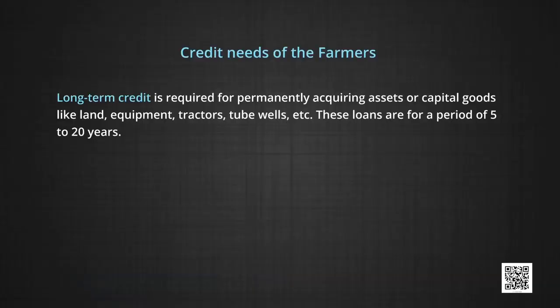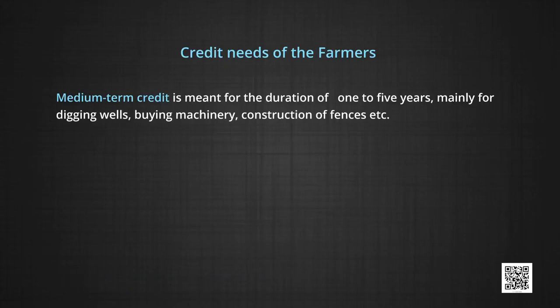Most farming families in India are small and marginal landholders, producing just enough for subsistence, and they do not have any savings which they could have used for investment. On the basis of time period, credit needs of the farmers are classified into three categories. Long-term credit is required for permanently acquiring assets or capital goods like land, equipment, tractors, tube wells, etc. These loans are for a period of 5 to 20 years. Medium-term credit is meant for the duration of 1 to 5 years, mainly for digging wells, buying machinery, construction of fences, etc.